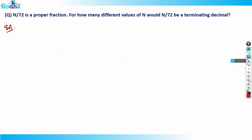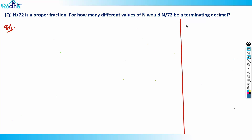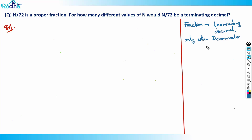First, let's get the concept of a terminating decimal. Any fraction will be a terminating decimal only when the denominator is of the form 2^x × 5^y — that means it only contains powers of 2 and 5.